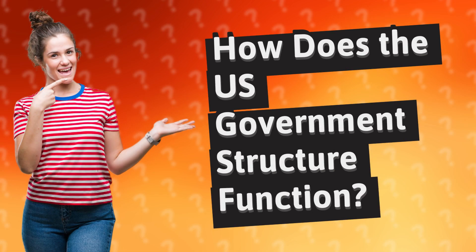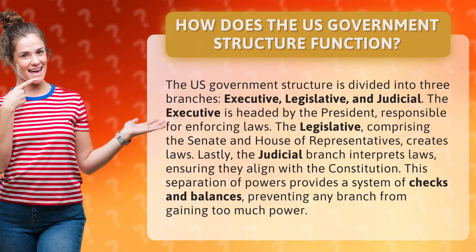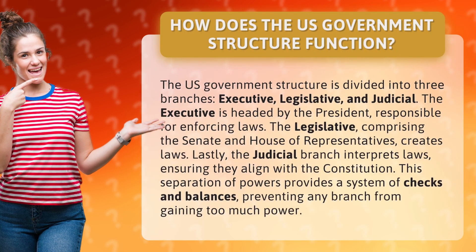How does the U.S. government structure function? The U.S. government structure is divided into three branches: executive, legislative, and judicial.